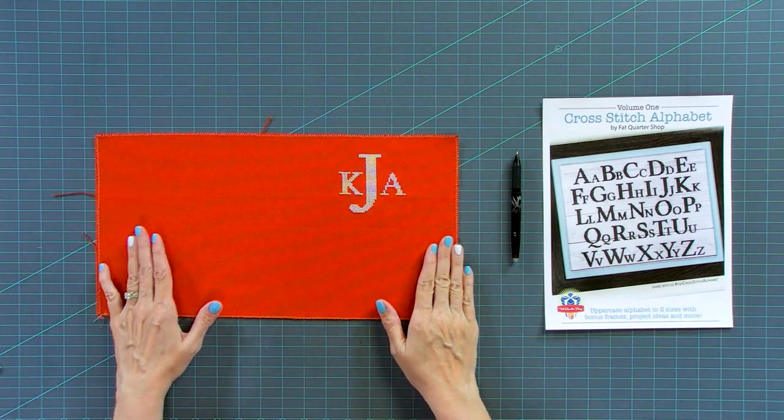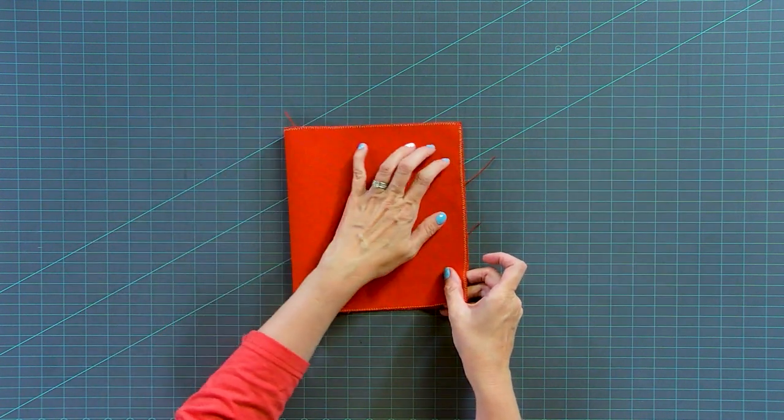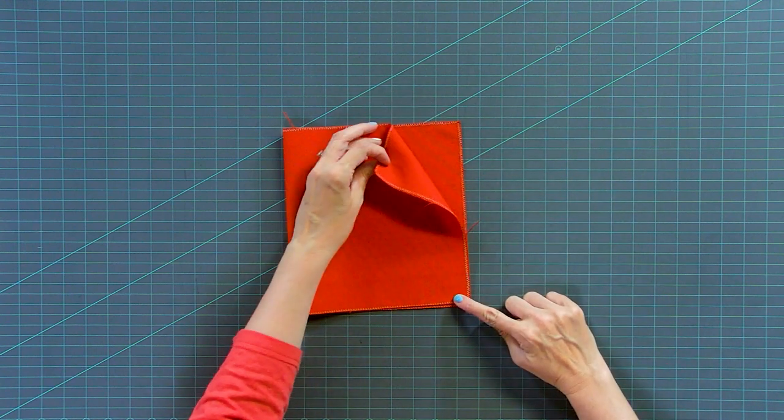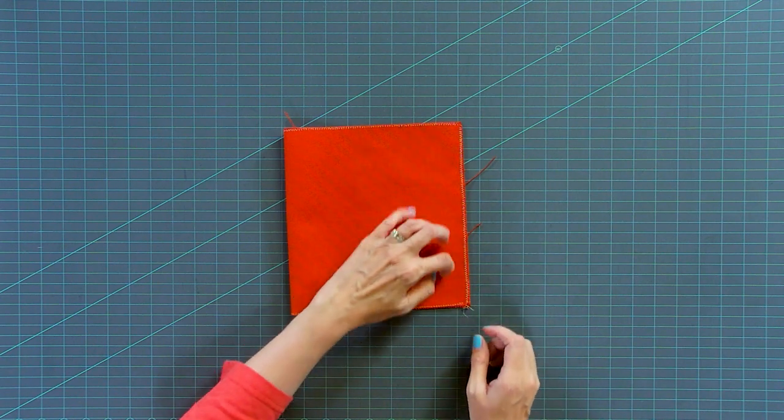And from here, we're gonna attach the cuff to the stocking. We're gonna put our Lugana right sides together. And we're gonna stitch right here, a quarter inch away from the edge. And you do wanna backstitch when you start and stop.